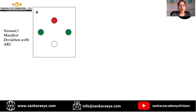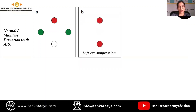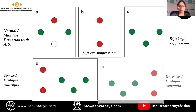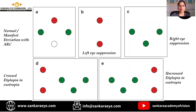Interpreting the Worth four dot test with the red glass over the right eye and the green glass over the left eye: if the patient sees four dots in the absence of squint, it indicates a normal fusion response. In the case of a manifest deviation, it indicates abnormal retinal correspondence. If the patient sees only two red dots, it indicates left suppression. If the patient sees three green dots, it indicates right suppression. If the patient sees five dots, it indicates diplopia or alternate suppression.